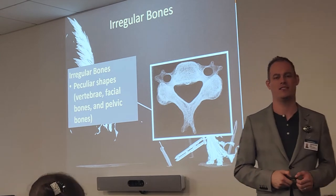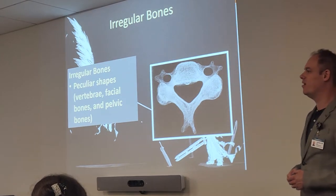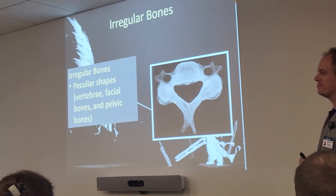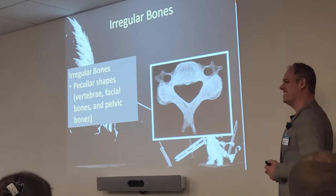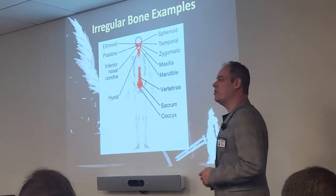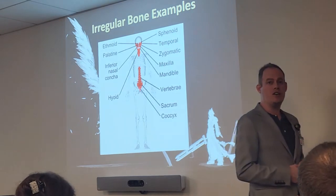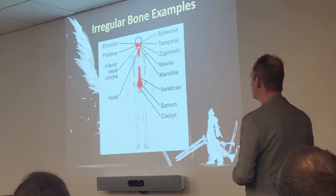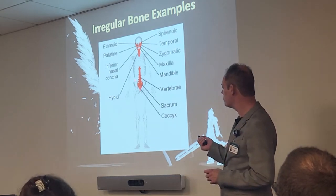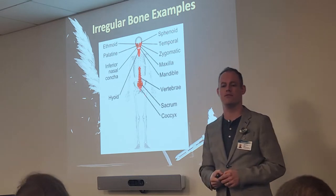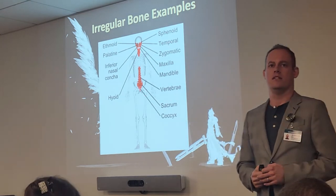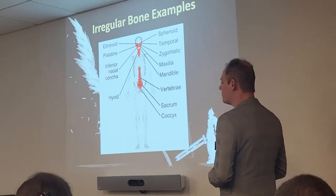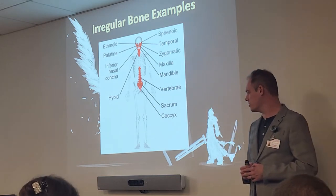Those are your irregular bone examples. We have the facial bones, the majority of your spine — really your whole spine from sacrum to coccyx — and of course the pelvic bones also fall under the irregular bones variety. That's going to be mostly your axial skeleton in that irregular bones category, except for those pelvic bones, which are part of the appendicular skeleton.